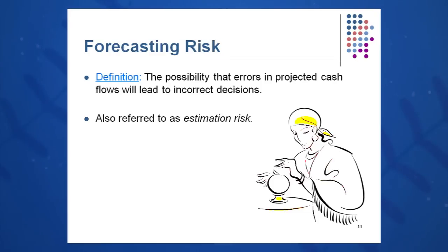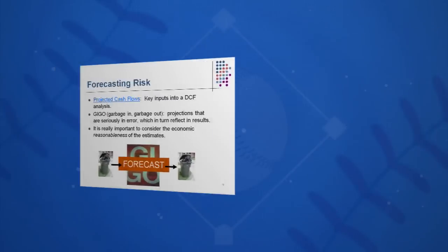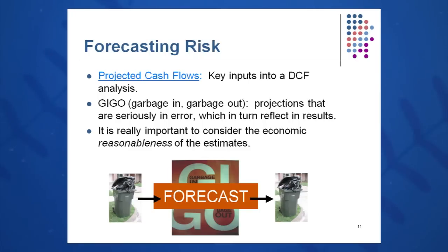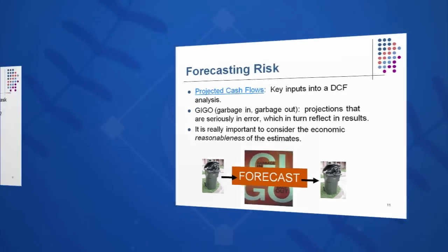This is called forecasting risk or estimation risk. Be very careful when you put your estimates together because the old adage applies: garbage in equals garbage out. Your cash flows are key input to the decision and your DCF analysis, and you've got to get it as close as possible. If one of your colleagues is suggesting we change the numbers or fiddle with the numbers, be very, very careful doing that.